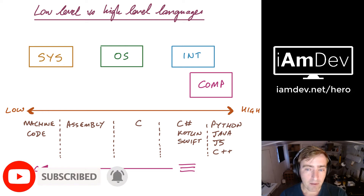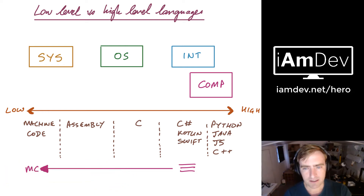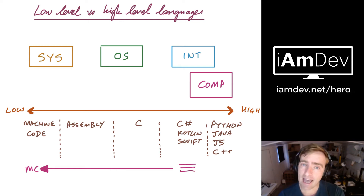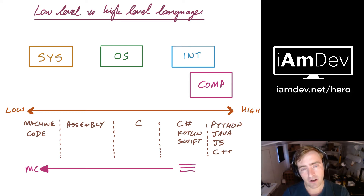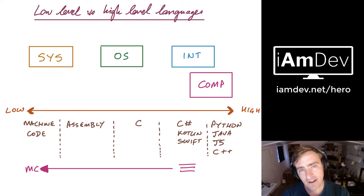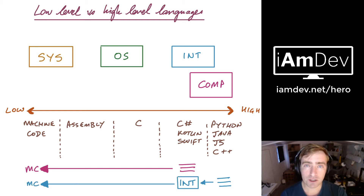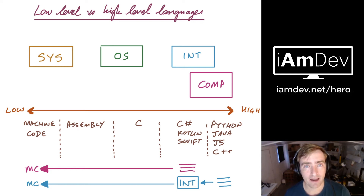Finally, we have stuff like Python, Java, JavaScript, and C++. These are not compiled, although they can be in some cases. What an interpreter does is take that code — it doesn't compile it into machine code, but rather as you're running the program, the end user runs the program, it fires into that interpreter, which creates machine code on the fly that your system then processes.